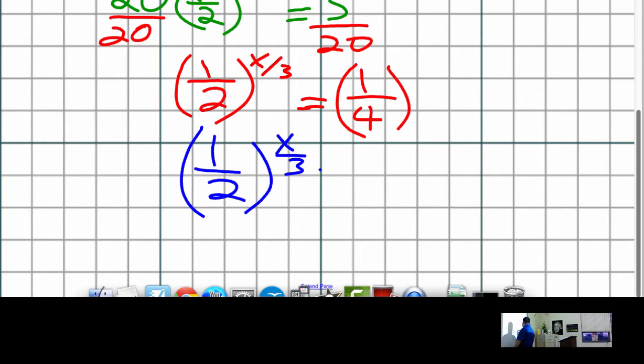So we've got x to the third. Now I could rewrite this as one over two squared, right? One half times one half equals one fourth, right?